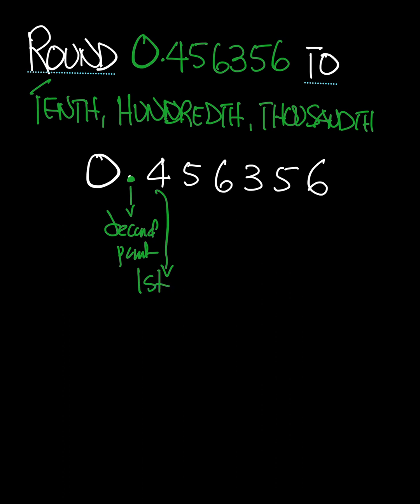This is our first decimal number. To round to the nearest 10th, we ask: what is the number after this 4 — after the first decimal number? That number is 5. And since that number is 5, or if it was more than 5, we're going to add 1 to this 4 here. So that's going to give us 0.5.